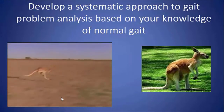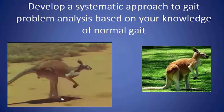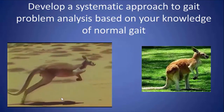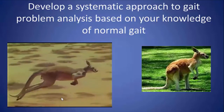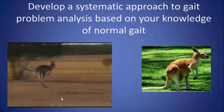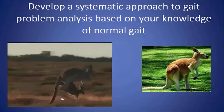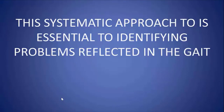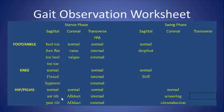According to some studies, as this animal moves faster and faster, it doesn't really have to expend much more energy because of this energy storage in the Achilles tendon. A systematic approach is essential to identify problems reflected in the gait — you have to go through joint by joint, understand normal gait, and only then can you develop a treatment program.